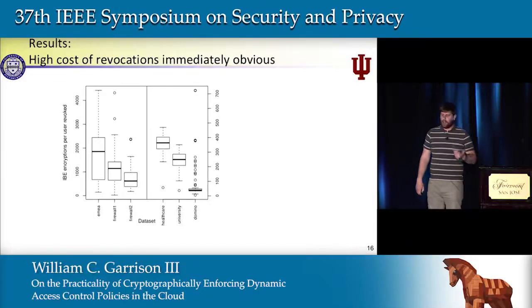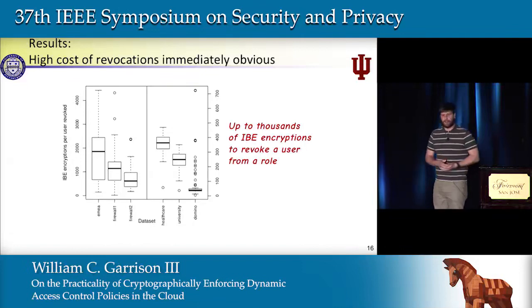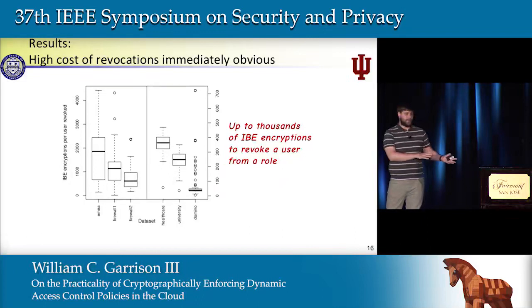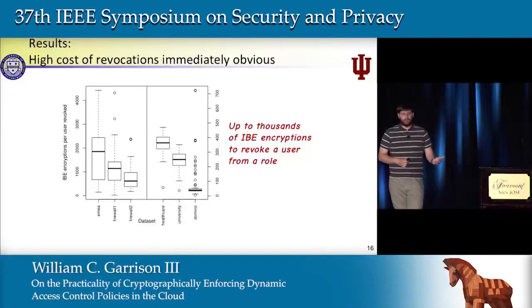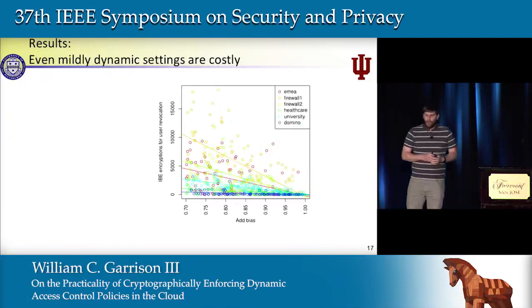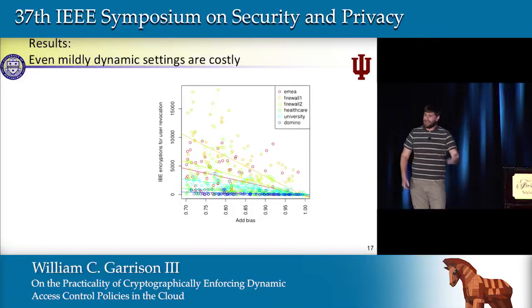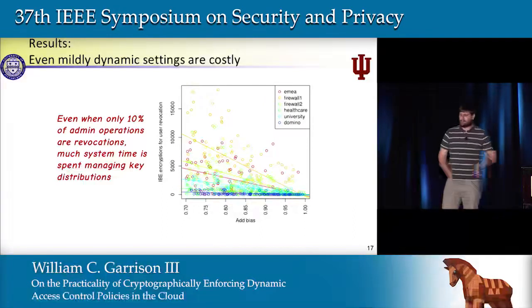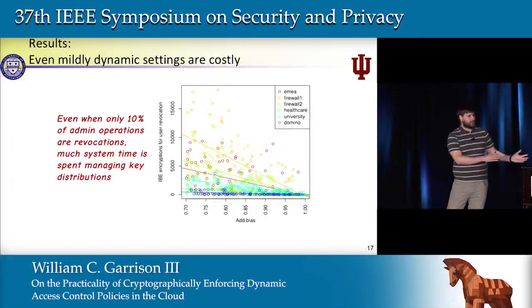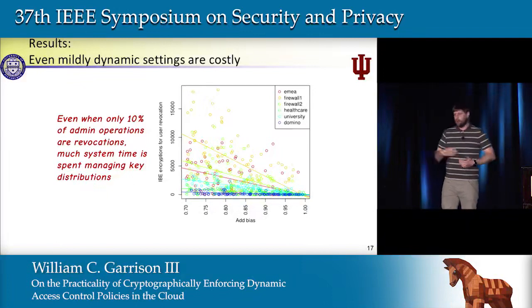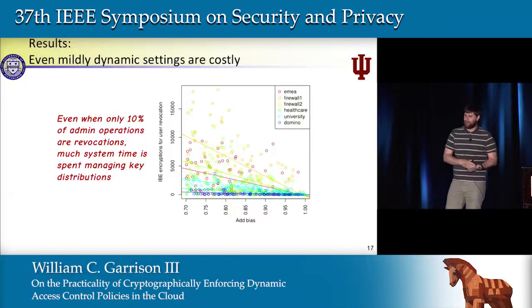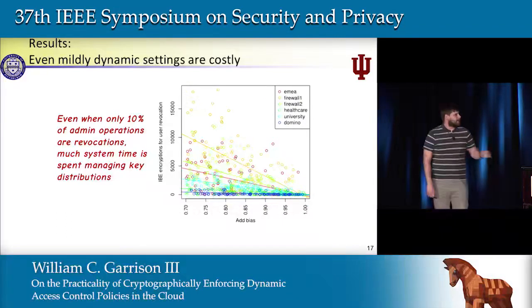What was immediately clear is the cost of revocations: up to thousands of metadata tuples needing to be regenerated — each requiring download, signature verification, decryption, metadata adjustment, potential key generation, re-encryption, re-signing, and re-uploading to the server. Even at 10 percent of administrator actions being revocations, costs were already starting to blow up. So even after engineering the system to be as efficient as possible — sometimes at the expense of security — only 10 percent revocations makes this likely impractical.